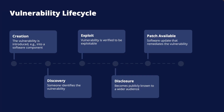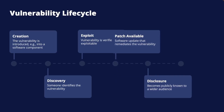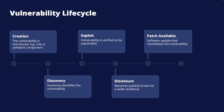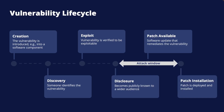The patch available stage is when the vendor has released a software update that remediates the vulnerability so it is no longer exploitable. Some vendors publish patches as soon as they are available, while others only publish on a predefined schedule. For high severity vulnerabilities, such schedules can be bypassed when immediate remediation is needed. In many cases, a patch is available before the vulnerability is publicly disclosed, and sometimes the patch itself can be analyzed to understand the vulnerability.